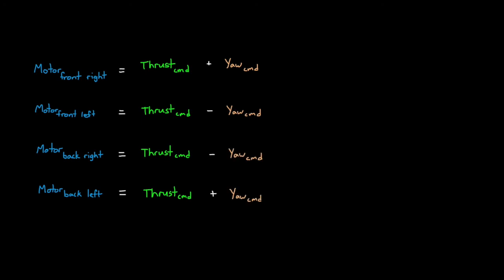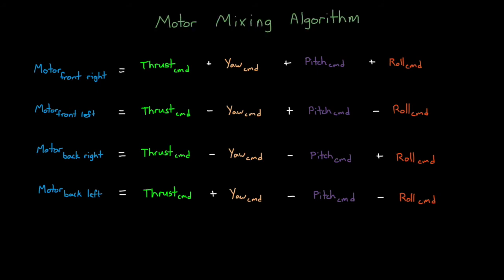As we now know, we can command thrust by setting all four motors to the same speed. Then we can create yaw by increasing two motors spinning the same direction and decrease the other two. Pitch is created by increasing or decreasing the front motor pair, and then commanding the back pair in the opposite direction. And roll is the same, but with the left-right pair. This is our simple motor mixing algorithm that can convert between the intuitive roll, pitch, yaw, and thrust, and the less intuitive motor speeds.